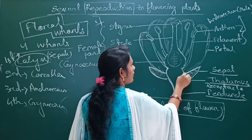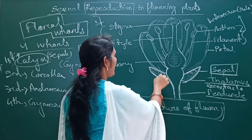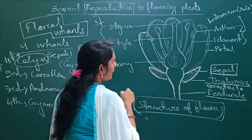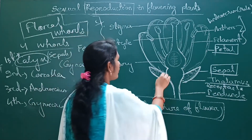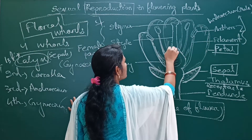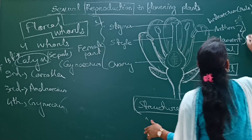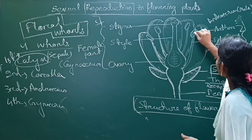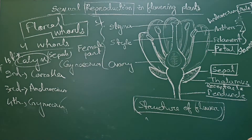The first whorl is calyx, and its individual member is called sepal. The second whorl is corolla, and its individual member is called petal. The third whorl is androecium, which is the male part of the flower, and its individual member is called stamen.